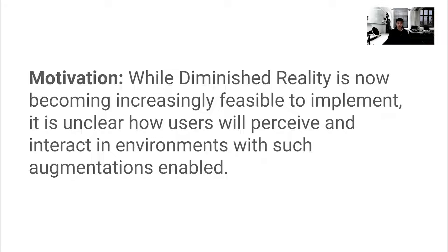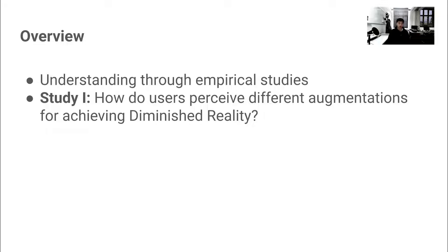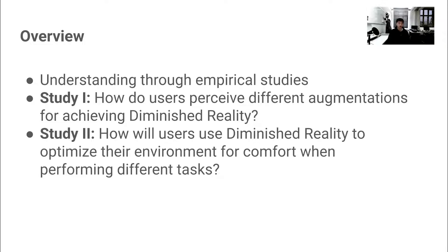Our work was motivated by the following observation: while diminished reality is now becoming increasingly feasible to implement, it is unclear how users will perceive and interact in environments with such augmentations enabled. We decided to address this challenge through conducting two empirical studies. In our first study, we investigated how users perceive different augmentations for achieving diminished reality. In our second study, we investigated how users will use diminished reality to optimize their environment for comfort when performing different tasks.